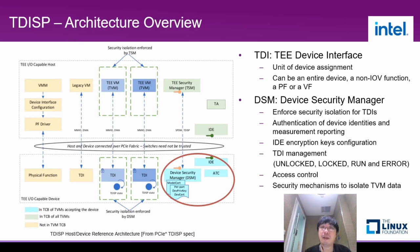This is the TDISP host-device reference architecture defined in the TDISP spec. In this figure, one TE-IO capable device can host multiple TDIs. TDI is the TE device interface — the unit of device assignment defined in TDISP spec. A TDI can be an entire device, a non-SR-IOV device, a PF, or a VF. On the left side, VM PF drivers are not trusted, so they are not in any TCB. One TDI is assigned to a legacy VM, and at the same time two more TDIs are assigned to TVMs separately. TDISP not only requires the device to host TDIs but also requires the device to implement a device security manager, DSM, which is a logical entity in the device to enforce security isolation.